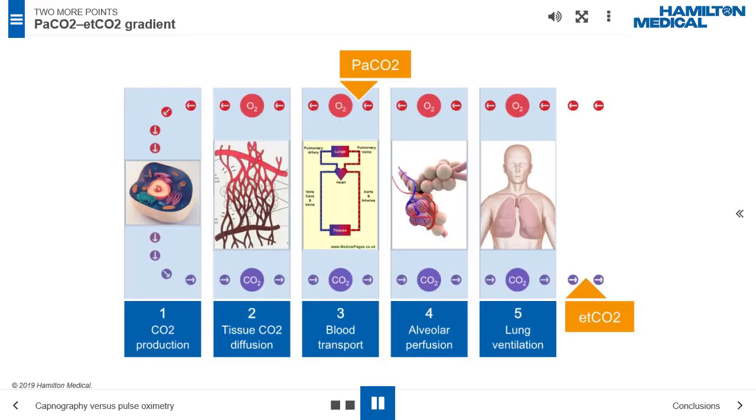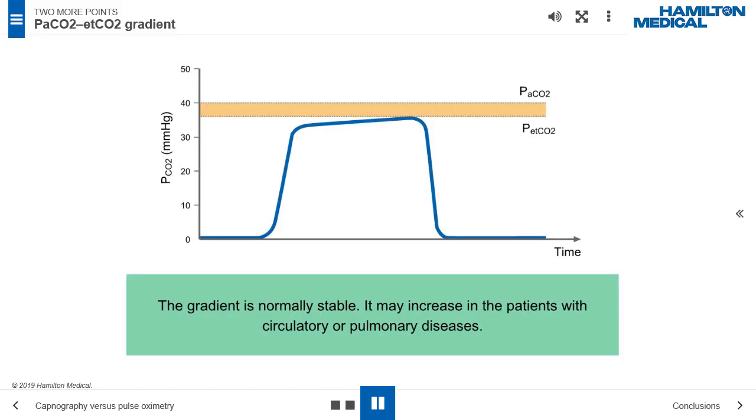PaCO2-ETCO2 Gradient. The difference between PaCO2 and ETCO2 is termed as PaCO2-ETCO2 Gradient. In a healthy person breathing room air, ETCO2 is between 2 and 5 mmHg lower than PaCO2. In the case of abnormal ventilation perfusion ratio, the PaCO2-ETCO2 Gradient increases. This occurs in the case of lung heterogeneity such as COPD and ARDS conditions, or in case of decrease of the lung perfusion such as shock or pulmonary embolism.